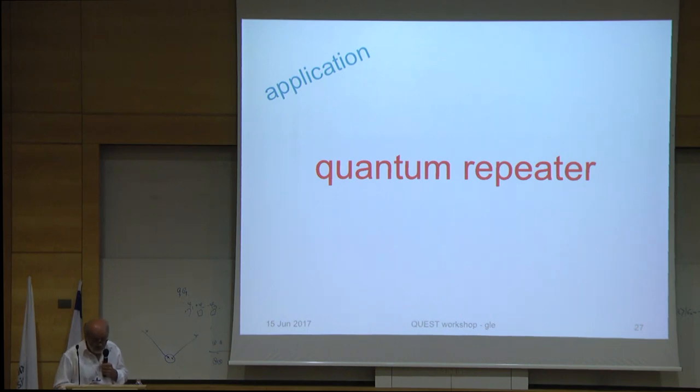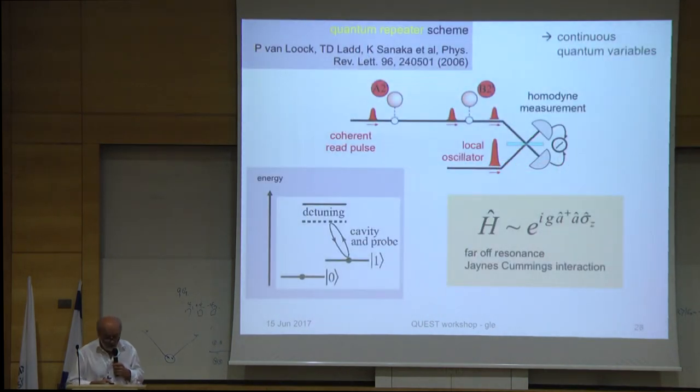Very briefly, a quantum repeater. Dieter Meschede already told you a lot about the quantum repeater. With this first experiment that I showed you, where we have the possibility to impose a phase shift on a coherent light field, that gives us also the opportunity to build a quantum repeater without any single photons or discrete excitations, but just using coherent light field on the optical side. The proposal for this quantum repeater came from the group of Yoshi Yamamoto. First author here is Peter von Loock.